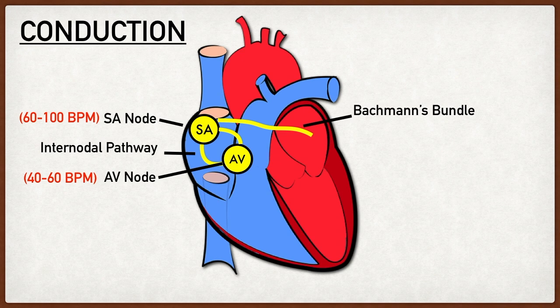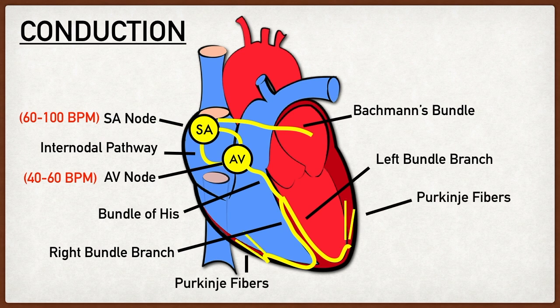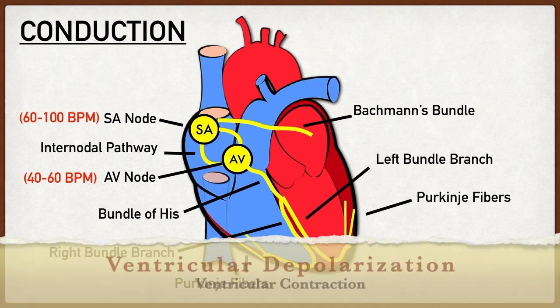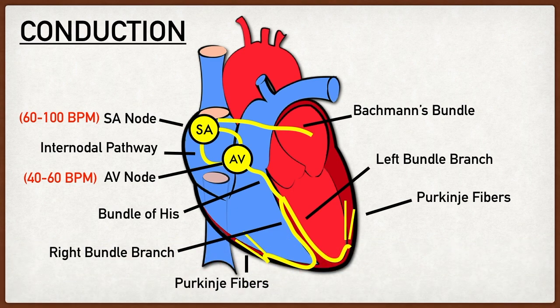Once the action potential travels through the AV node, it continues through the interventricular septum using the bundle of His, followed by the right and left bundle branches, followed by the Purkinje fibers, which spread throughout the ventricular myocardium. As the action potential travels through this portion of the conduction system, it leads to ventricular depolarization and ventricular contraction. The right bundle branch depolarizes mainly the right ventricle, and the left bundle branch mainly depolarizes the left ventricle.